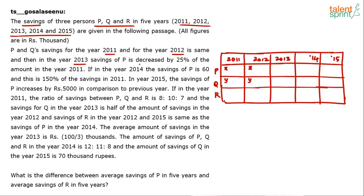In 2013, savings of P decreased by 25% compared to 2011. Since it decreased by 25%, P's savings in 2013 will be 75% of x.